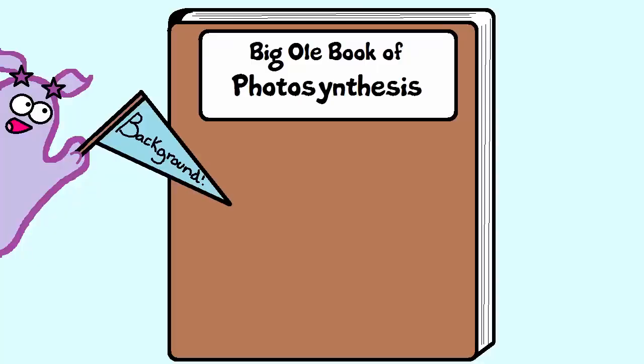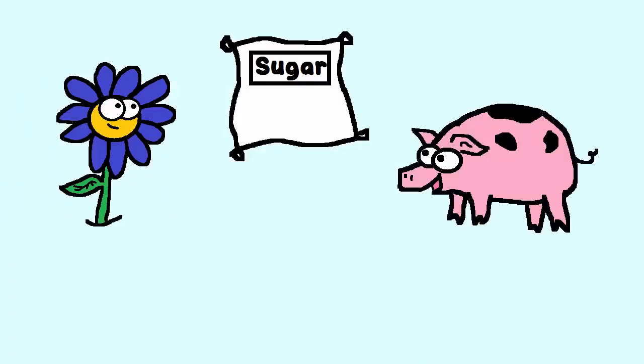First, a little background. Plants and animals need sugar, specifically glucose.